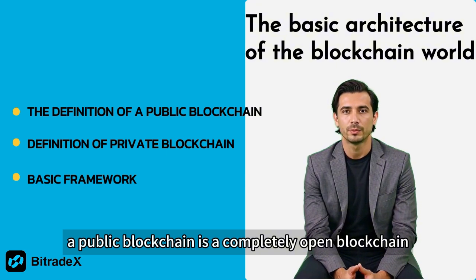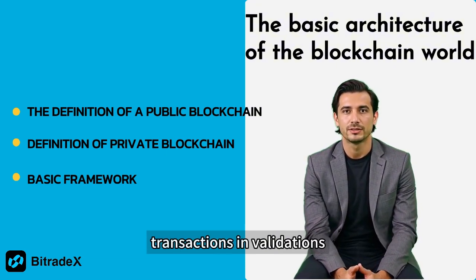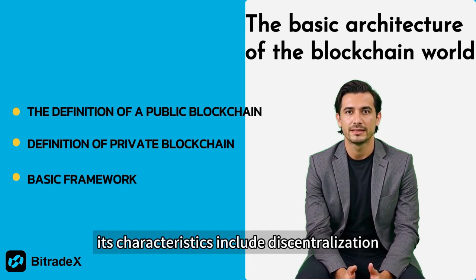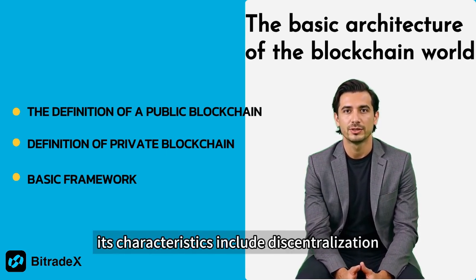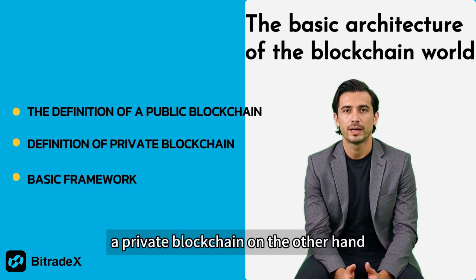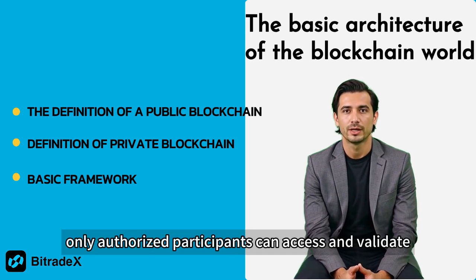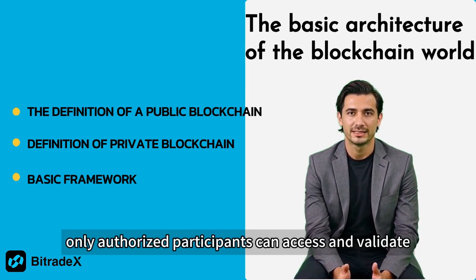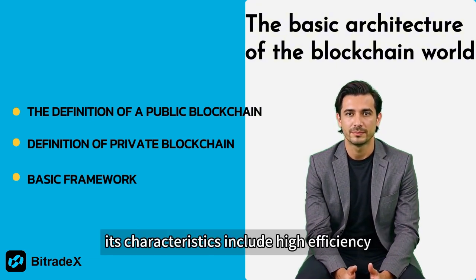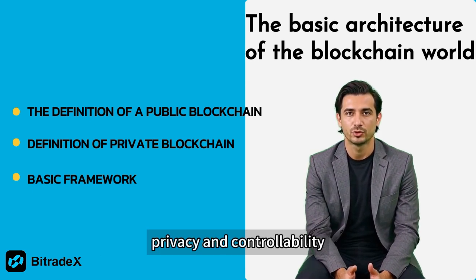A public blockchain is a completely open blockchain where anyone can participate in transactions and validations, such as Bitcoin and Ethereum. Its characteristics include decentralization, transparency, and openness. A private blockchain, on the other hand, is a restricted blockchain where only authorized participants can access and validate, often used within enterprises. Its characteristics include high efficiency, privacy, and controllability.